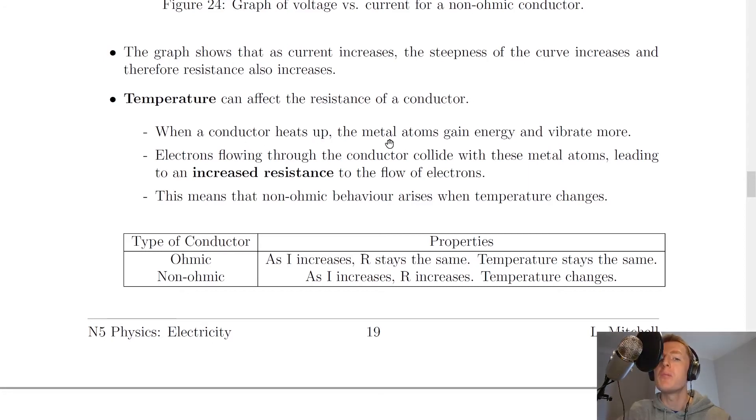Well, when a conductor heats up, the metal atoms gain energy and will vibrate more. Electrons flowing through the conductor collide with these metal atoms, leading to an increased resistance to the flow of electrons. So because you have more movement now from the metal atoms, which are vibrating more, that's going to cause an increased resistance to the flow of the electrons.